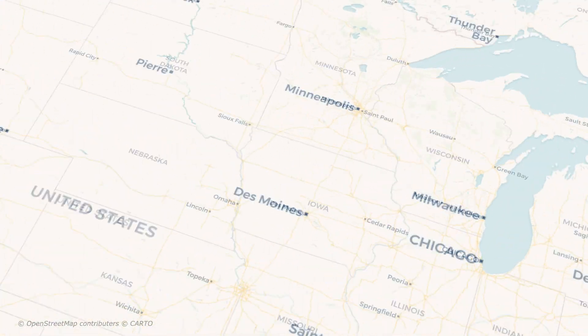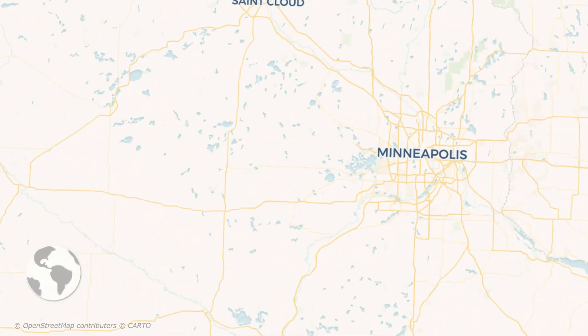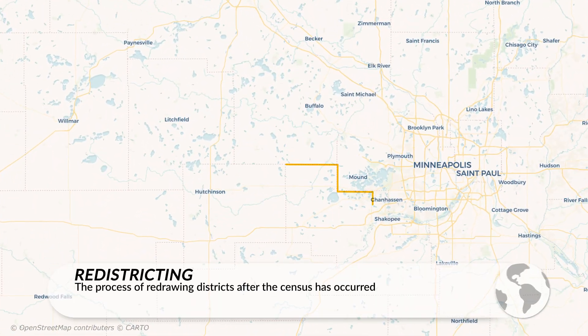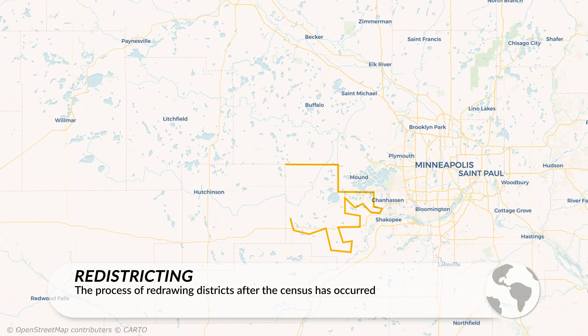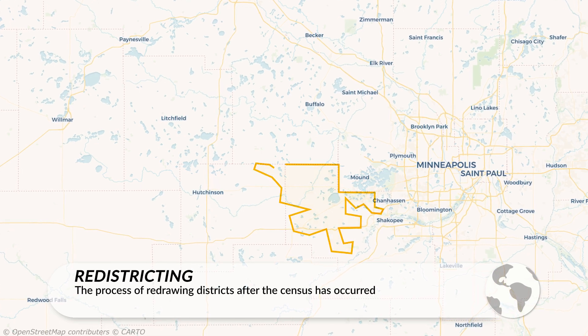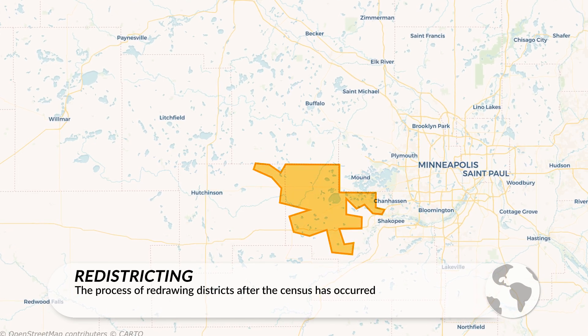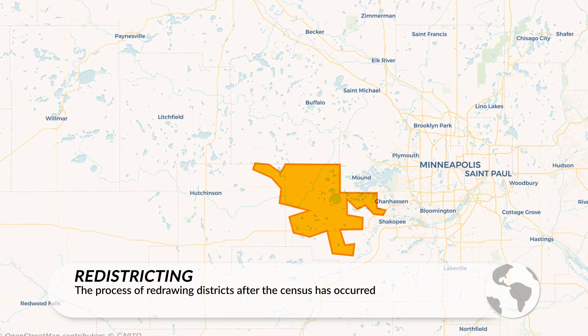Districts fluctuate over time. As population changes, districts may need to be redrawn to better reflect the population of a geographic area. The process of redrawing districts is known as redistricting, and it happens after the census is conducted every 10 years.